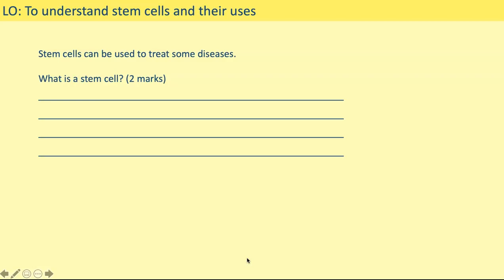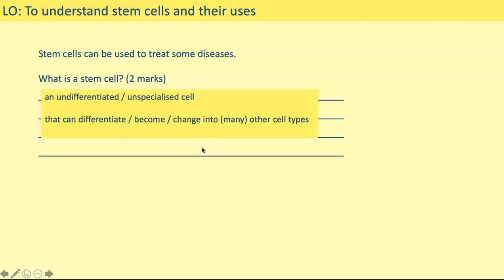Please make sure that you correct your answers as we go through. If you need more time on each question, just pause the screencast — the answers will be written on the screen. For the first question: 'Stem cells can be used to treat some diseases. What is a stem cell?' It's two marks, so we need two points. The first point is that it's an undifferentiated or unspecialised cell. The second point is that it can differentiate and change into other cell types.